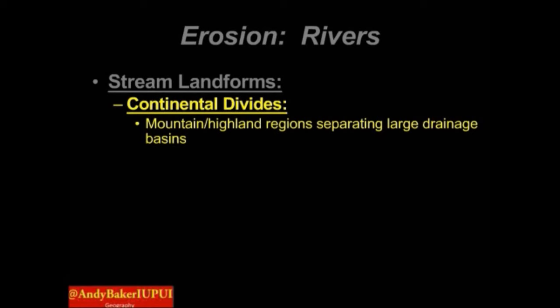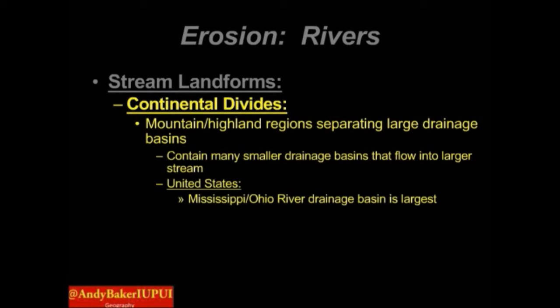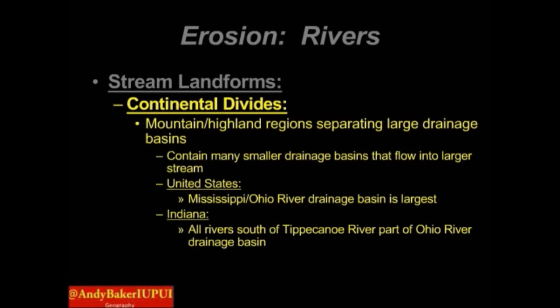Continental divides are essentially the mountain or highland regions that separate large drainage basins, though it doesn't always have to be mountains, as we'll see with Indiana. Continental divides contain many smaller drainage basins that flow into the larger drainage basin. The biggest in the United States is the Mississippi-Ohio River drainage basin. Pretty much all rivers south of the Tippecanoe River flow to the Ohio River — the White River West Fork, White River East Fork, the Wabash River — all flow southwest towards the Mississippi River and are part of the Mississippi River drainage basin.